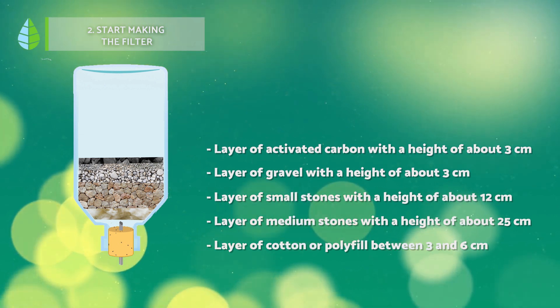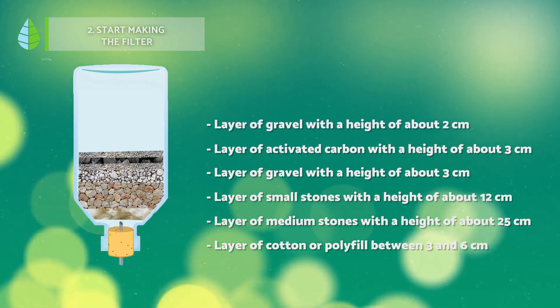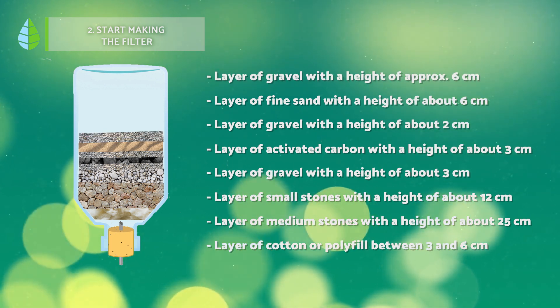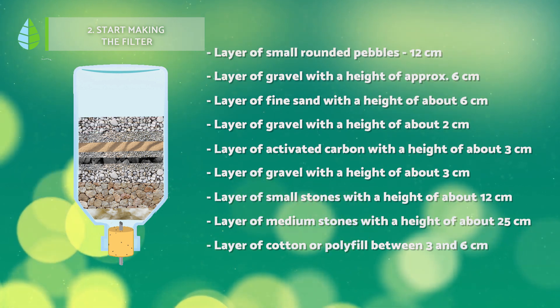This layer significantly increases the filtering properties of the system. A layer of gravel with a height of about 2 centimeters. A layer of fine sand with a height of about 6 centimeters. A layer of gravel with a height of 6 centimeters. A layer of small rounded pebbles with a height of 12 centimeters.